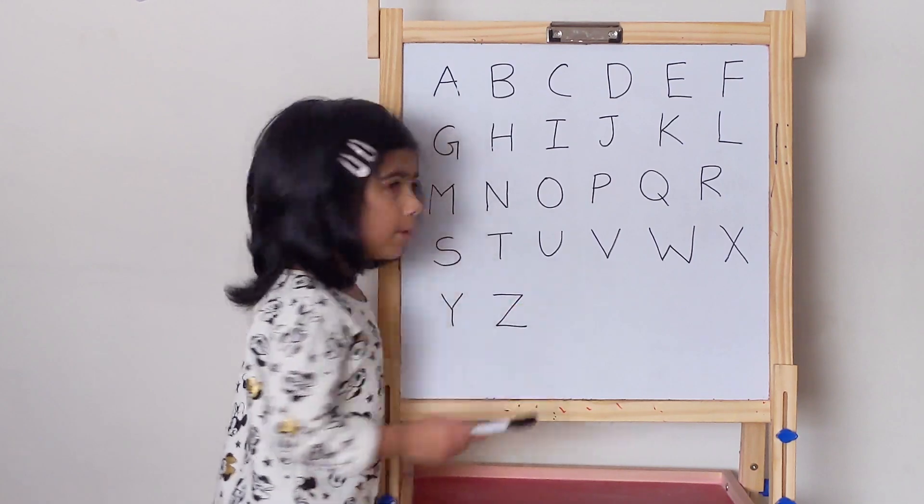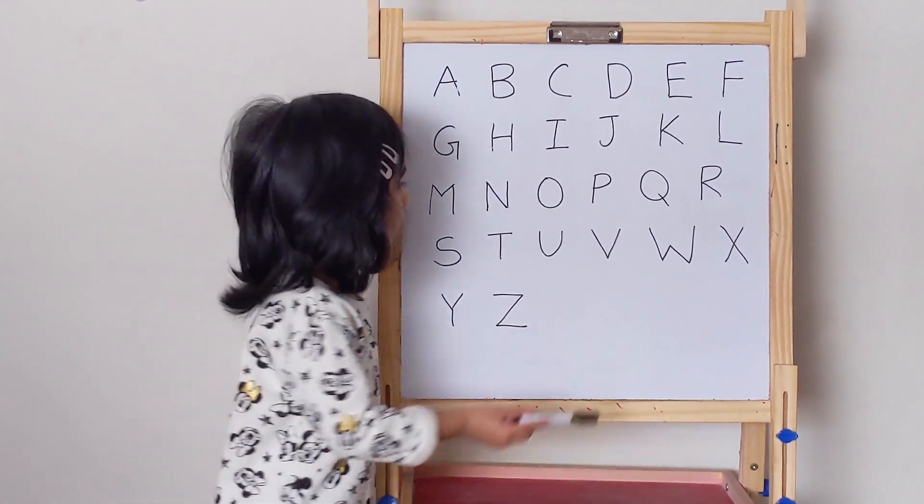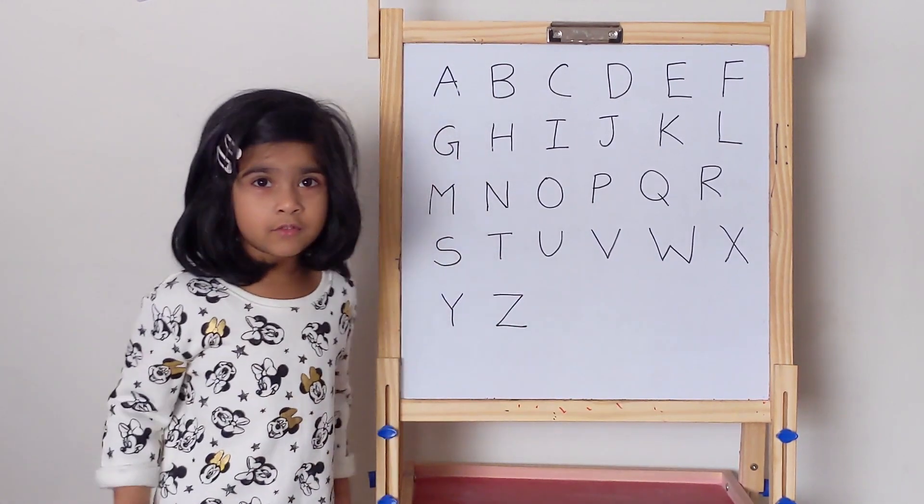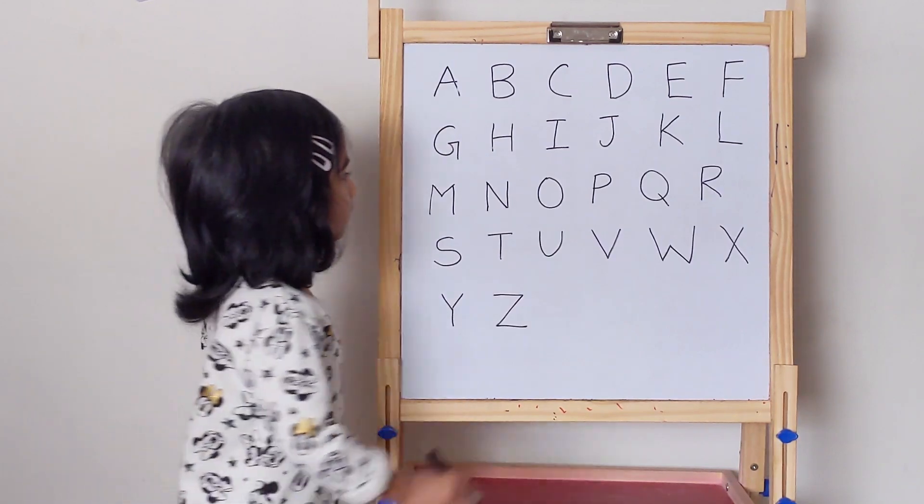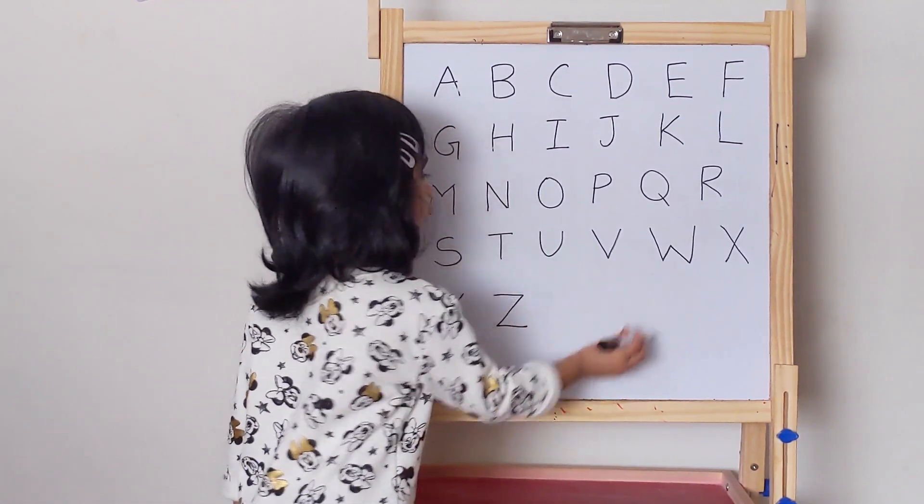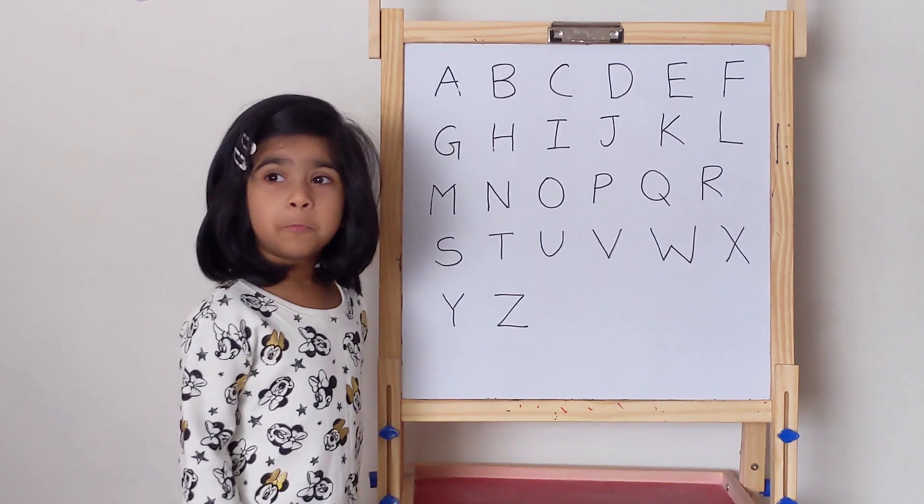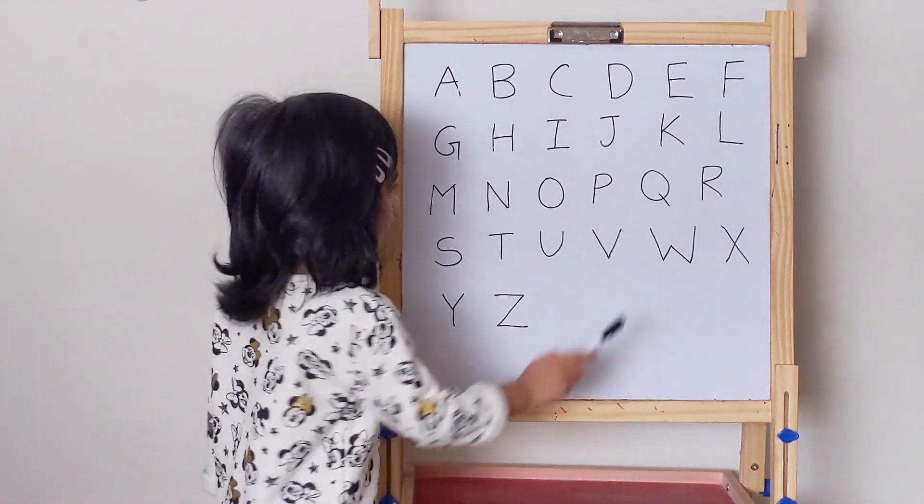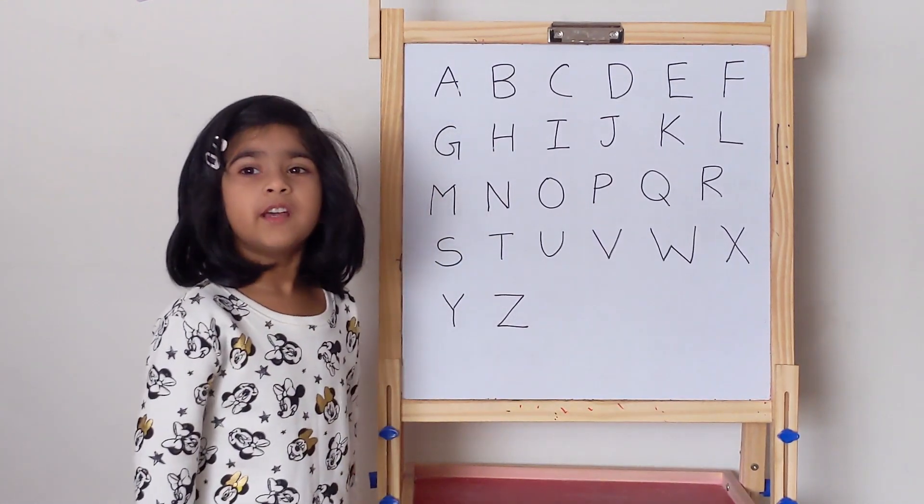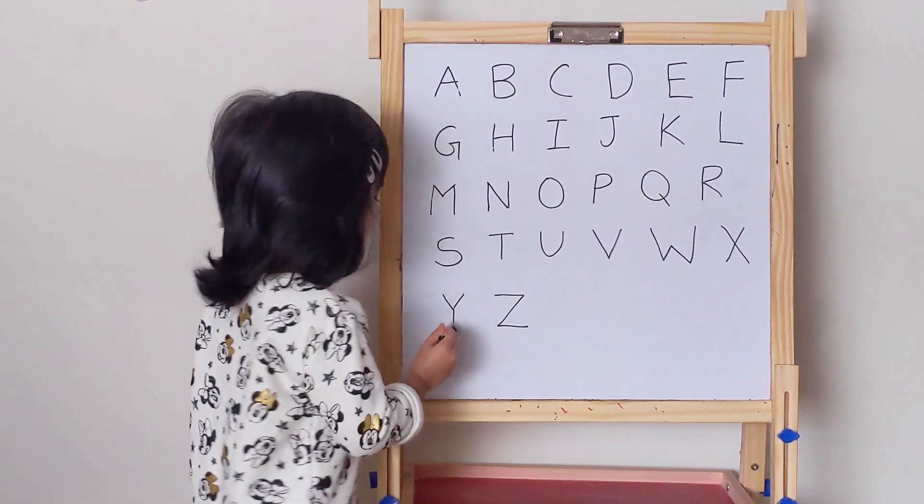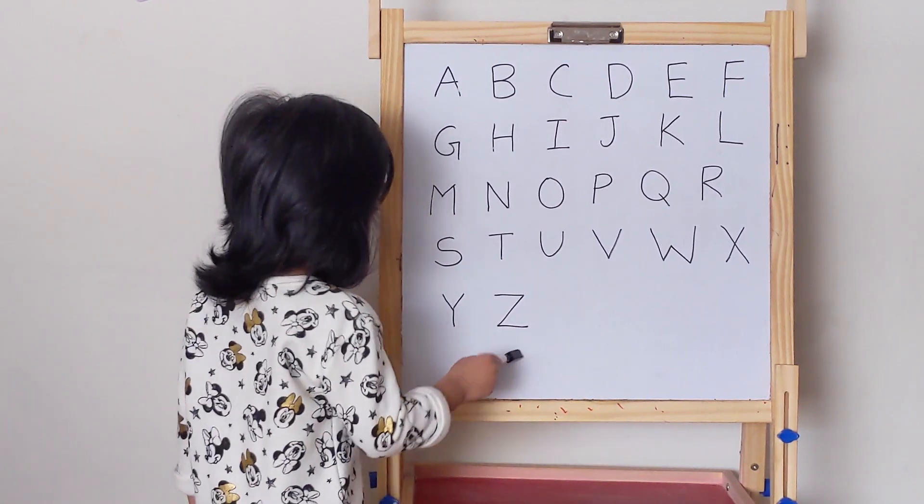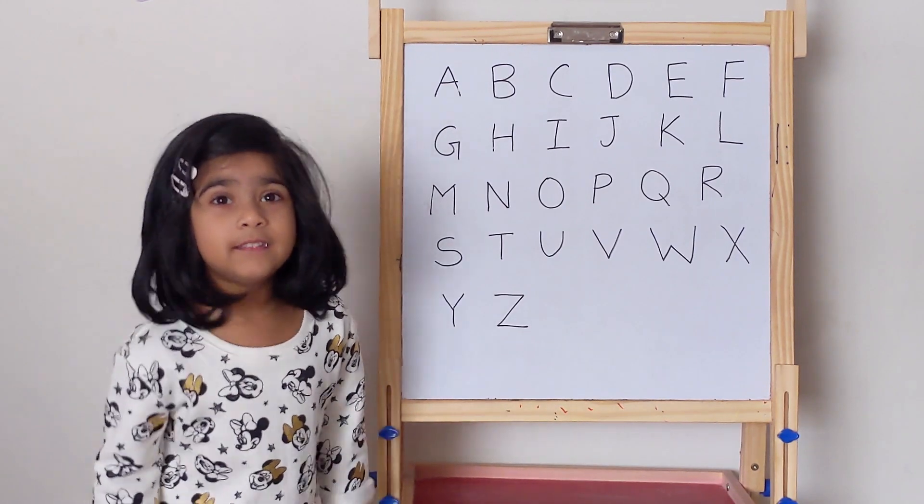U makes the sound A. V makes the sound R. W makes the sound B. X makes the sound S. Y makes the sound Y. Z makes the sound U.